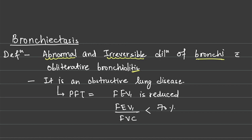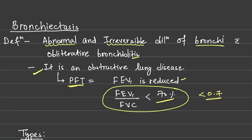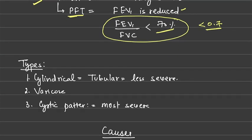Bronchiectasis is an obstructive lung disease. On PFT, it shows an obstructive pattern: FEV1 is reduced to less than 80 percent, and the FEV1/FVC ratio is also reduced to less than 70 percent or less than 0.7.